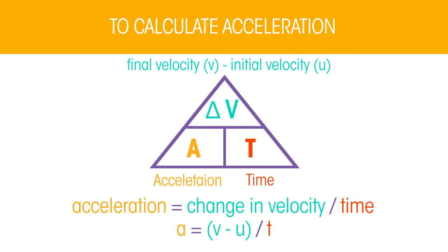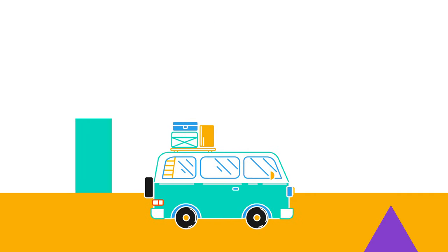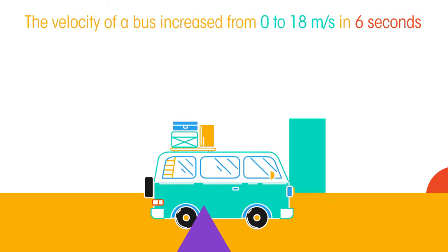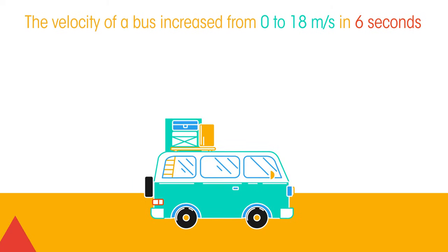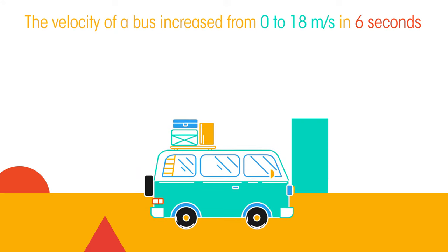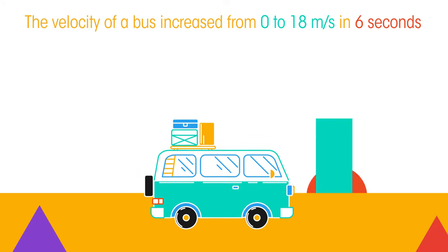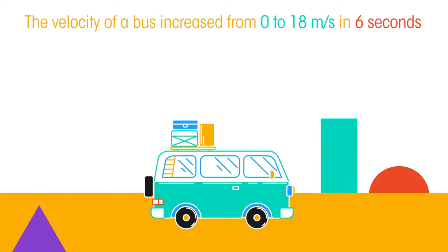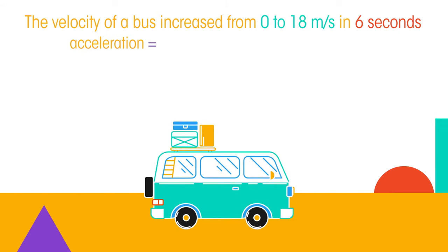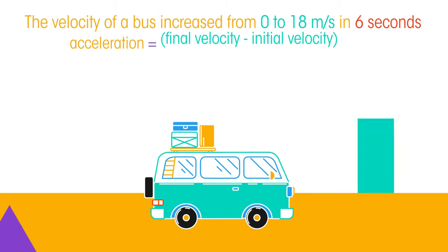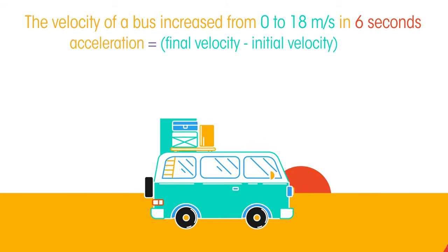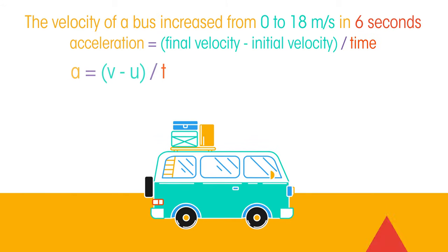Let's try an example: the velocity of a bus increased from zero to 18 meters per second in six seconds — calculate its acceleration. So acceleration equals final velocity minus initial velocity, over time.